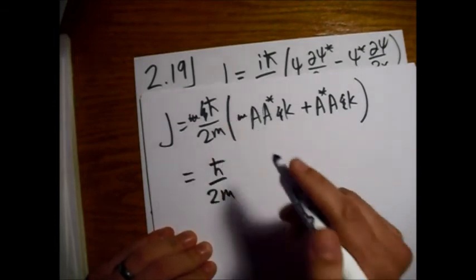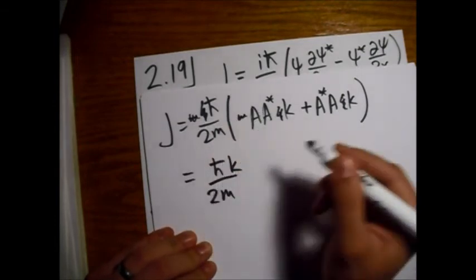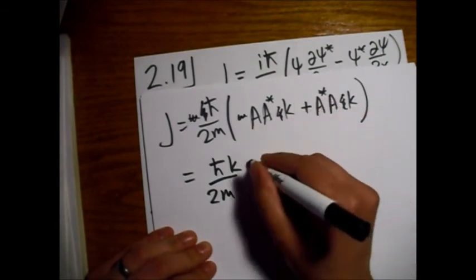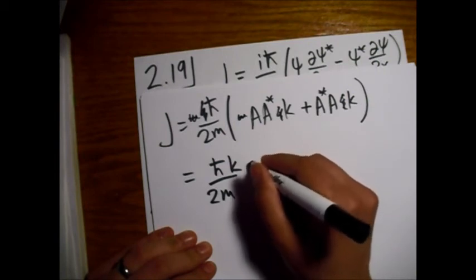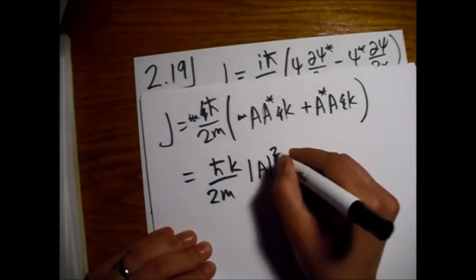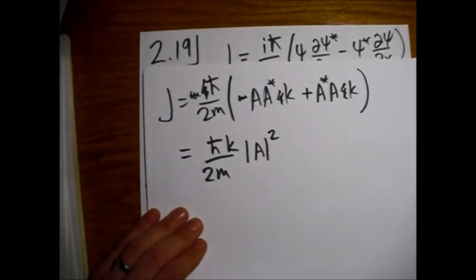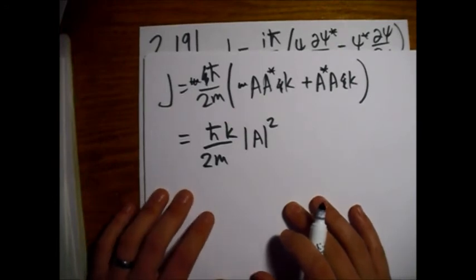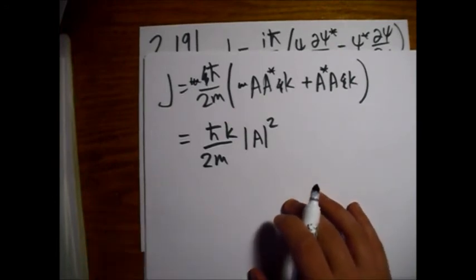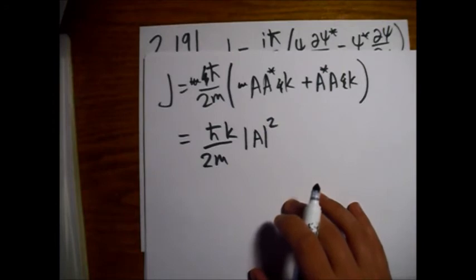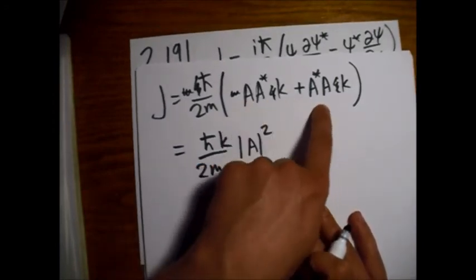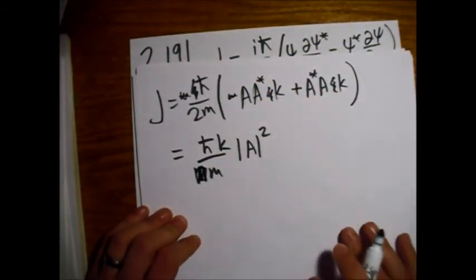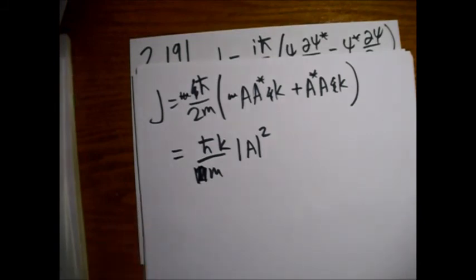Okay. So what do we have left over when the smoke clears? H bar over 2m. We have a K, and we also have the A, A star, or A star A, which is the square of A. All right. So let's see what we've got now. Did I miss? Ah, yes. These are the same term now, and we have a 2 that comes and cancels this 2. All right. So here we go.